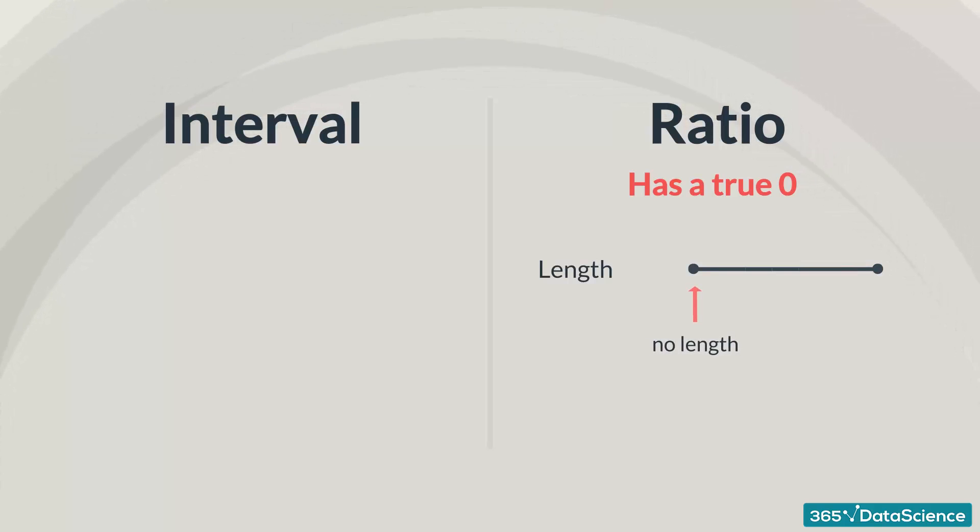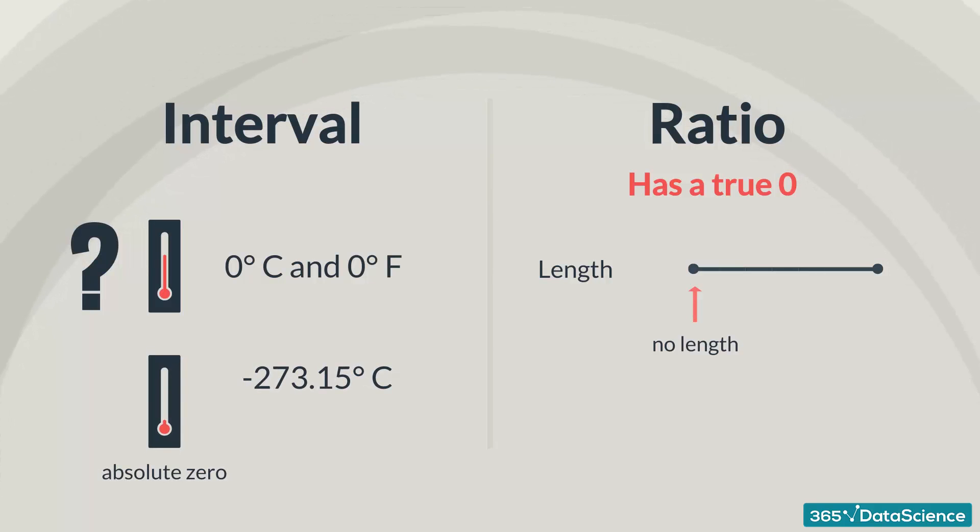With temperature, however, we have a different story. It is usually an interval variable. Let me explain. Usually, it is expressed in Celsius or Fahrenheit. They are both interval variables. 0 degrees Celsius or 0 degrees Fahrenheit don't mean anything, as the absolute zero temperature is actually negative 273.15 degrees Celsius or negative 459.67 degrees Fahrenheit.